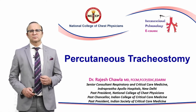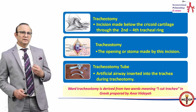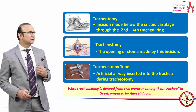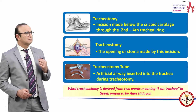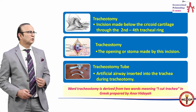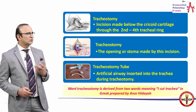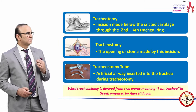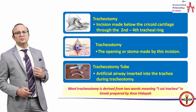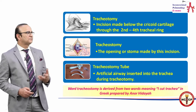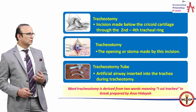In this module I am going to discuss about percutaneous tracheostomy. Let us understand a few terms. Tracheotomy is the word used when you make an incision below the cricoid cartilage through the second to the fourth ring. Tracheostomy is the opening or stoma made by this incision, and the tracheostomy tube is the artificial airway which is inserted into the trachea during tracheotomy.